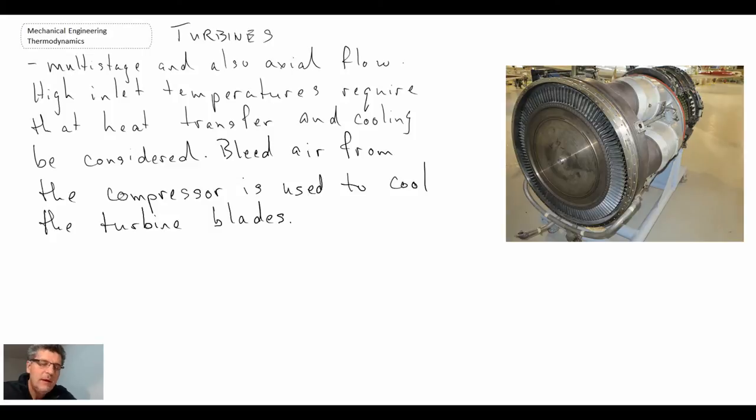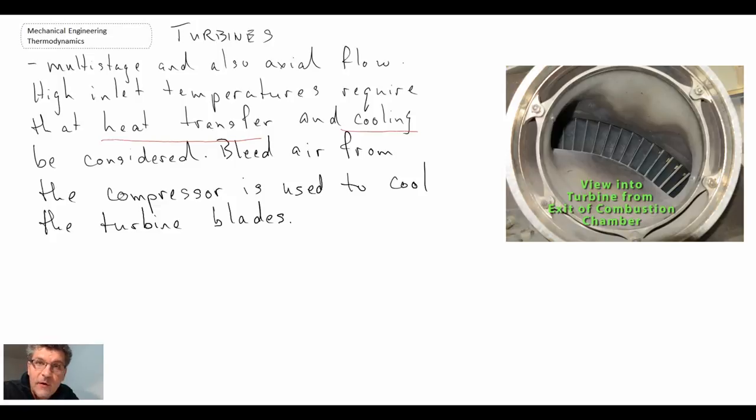With the turbine, what we're looking at—and we're talking here again about multi-stage and axial flow—we're dealing with high inlet temperatures. Consequently, we need to consider heat transfer and cooling of the blades. We either do that by material science, that is using high temperature alloys and different types of coating—aluminum oxide, ceramic coatings—and we also do it using heat transfer. For that, what we do is we take bleed air from our compressor and we use it to cool the turbine blades.